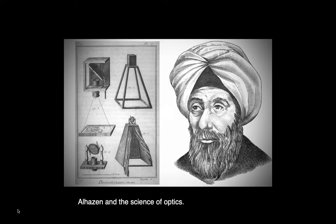Alhazen deduced that light travels in straight lines, and he theorized that the human eye works in the same way. Light reflected from objects passes through the narrow opening of the iris, or aperture, and it projects an image of the outside world onto a surface inside the dark interior. In your eyes, that projected image gets processed by your optic nerve, and it turns the image right side up, so we see.